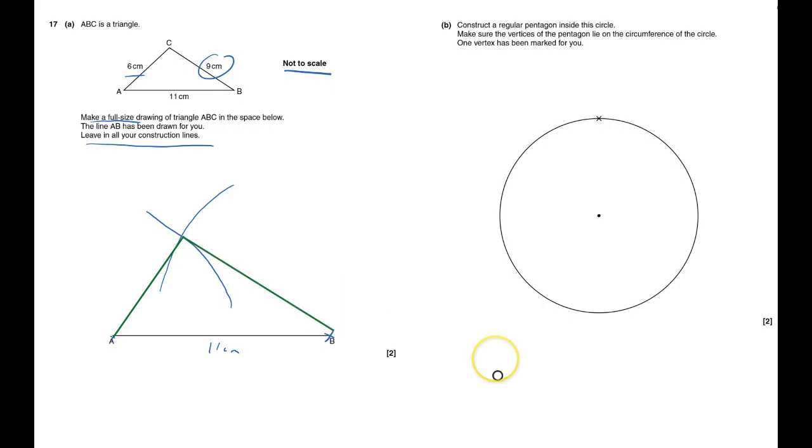I've now for the next bit I've got to construct a regular pentagon. Regular means all sides the same length, and inside the circle. Make sure the vertices, that means corners, lie on the circumference.